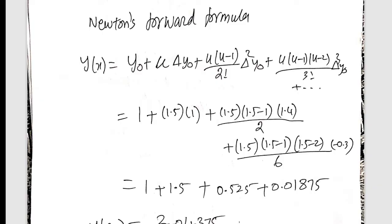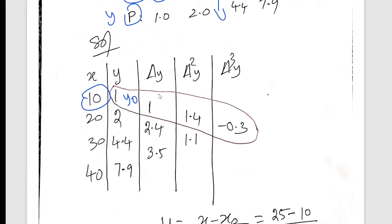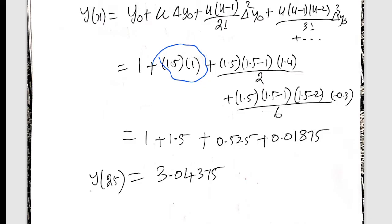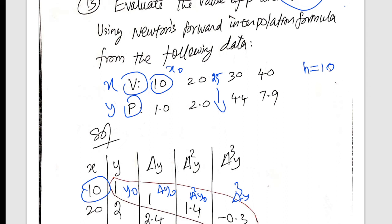So Newton's forward formula is: y equals y0 plus u·del y0, plus del square y0, plus del cube y0. So this is the value. Our answer is right. So what answer — question like x would correspond — put in the 2y checkpoint.